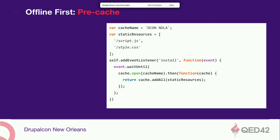There's a library called Service Worker Toolbox which simplifies all that code. With it, to do an offline-first application, all you need is: toolbox.router.get('/*', global.toolbox.cacheFirst) — rather than writing all that verbose code we saw earlier.